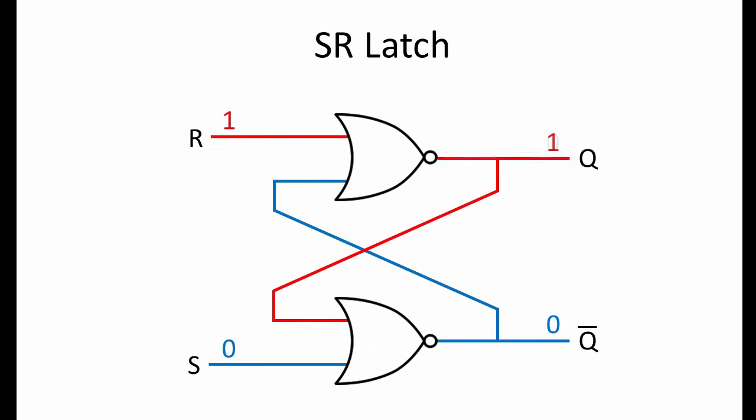Now we apply a pulse to input R to reset the latch. This changes the output of the top gate, and then this is fed back into the lower gate. The lower gate's output also changes, and this is fed back into the top gate. The pulse that was applied to reset the SR latch is then removed, and R is 0 again. But the output at Q is now 0, so the latch is now storing a 0.